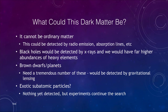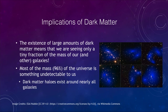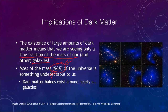If there is all of this dark matter out there, it means that what we've been studying is only a tiny fraction of the mass of our galaxy — and by implication, this applies to other galaxies as well. In fact, 96% of the mass of the universe is something undetectable through traditional methods like telescopes; all we're detecting is its gravitational effects. Essentially every galaxy we look at has some kind of dark matter halo around it, and within galaxy clusters we see large amounts of dark matter extending well beyond the galaxies themselves.